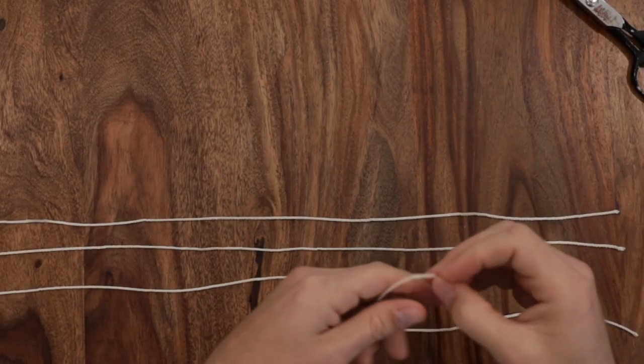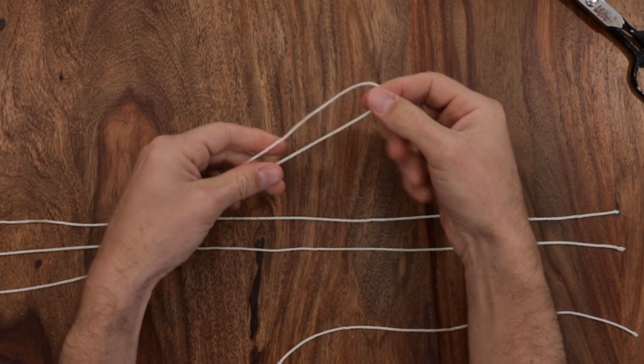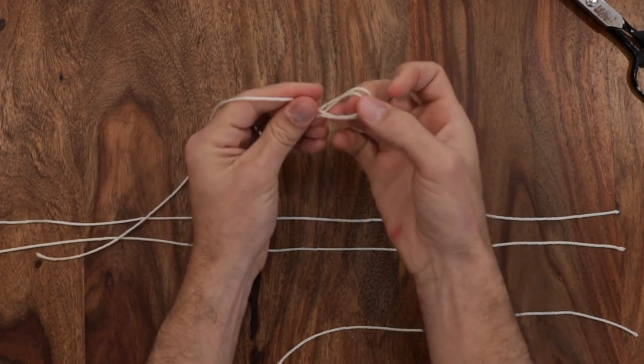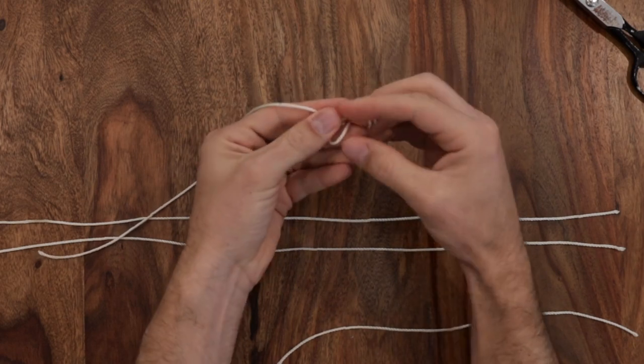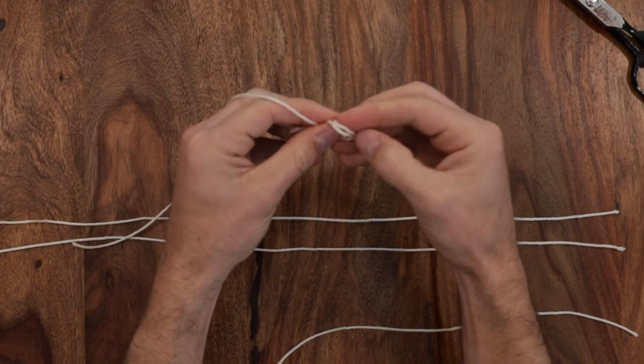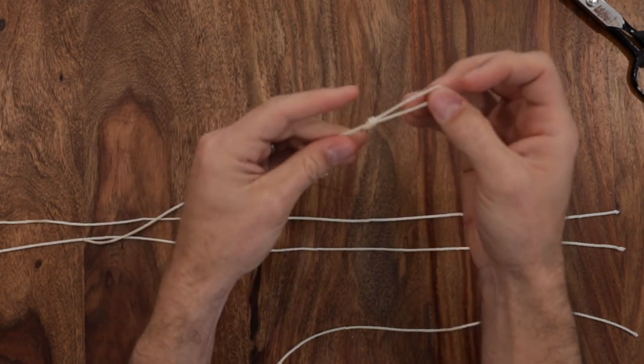So after you have your string all laid out, you're going to tie loops in the end of your string. There's a bunch of different knots you can do. The really easy one that we're going to use is you just double it over and then tie a little overhand knot, standard knot that you would do for anything, and that'll make a little loop at the end.